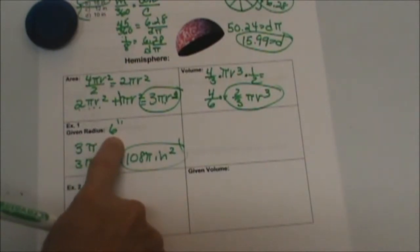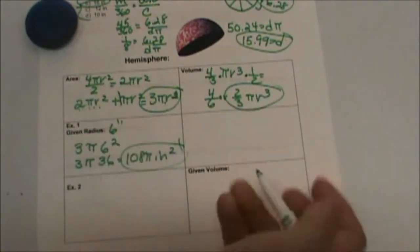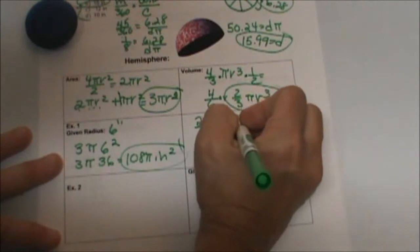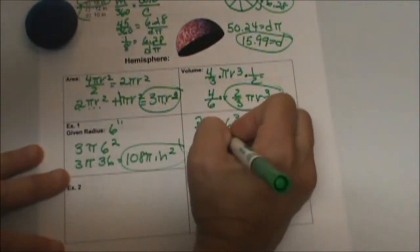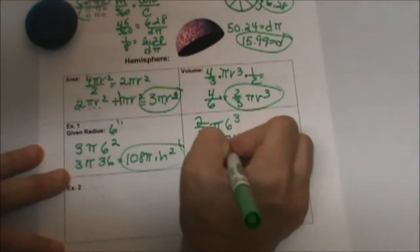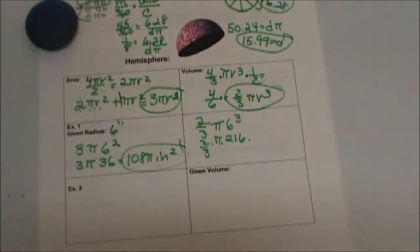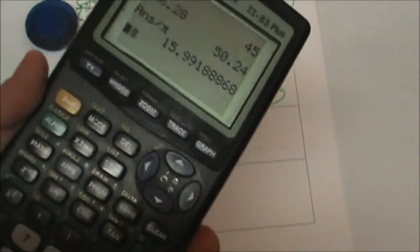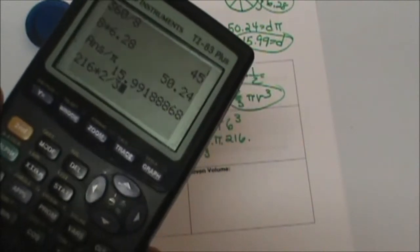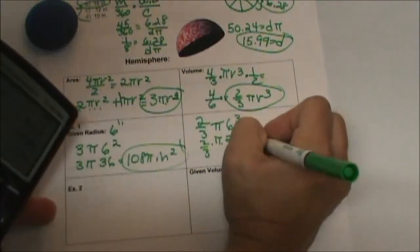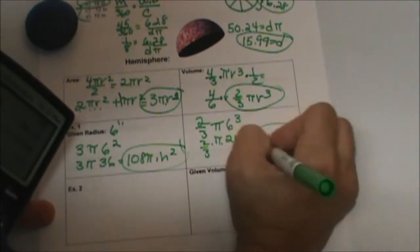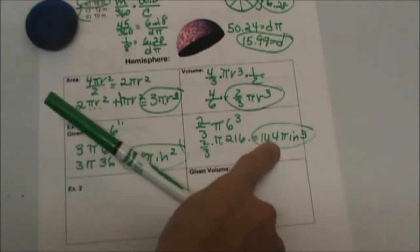Okay, volume is very similar. You're just plugging into your 2 thirds formula. 2 thirds times pi radius which is 6 cubed and 6 cubed a minute ago we said was 216. So 2 thirds times pi times 216 times 2 divided by 3 is 144. So it's 144 pi and this would be inches cubed because we're talking about the volume. Okay, so you can do that.